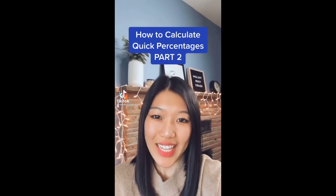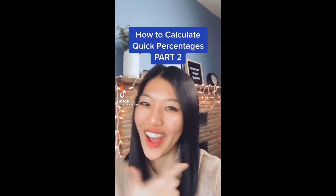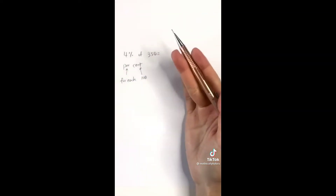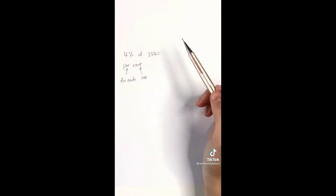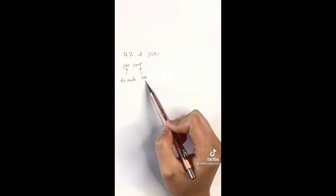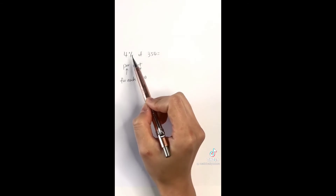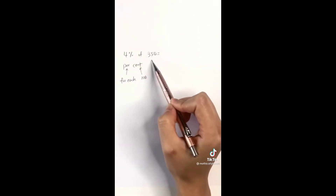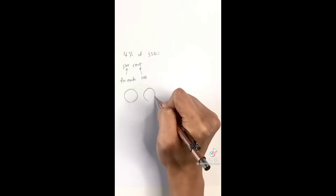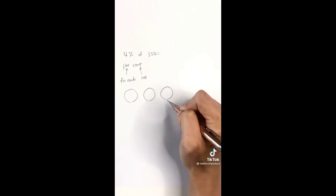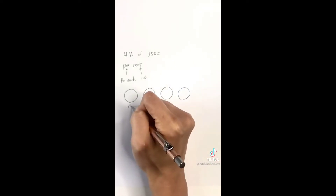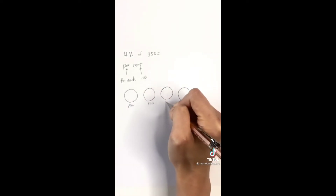How to calculate quick percentages, part two. What is four percent of 350 — not 300 or 400? In our first video we defined that percent literally means 'for each 100,' where we have four for each 100. How many hundreds do we have? Let's draw them out: we have 100, 200, 300 — but that's not enough, so we go to 400 and write that down.